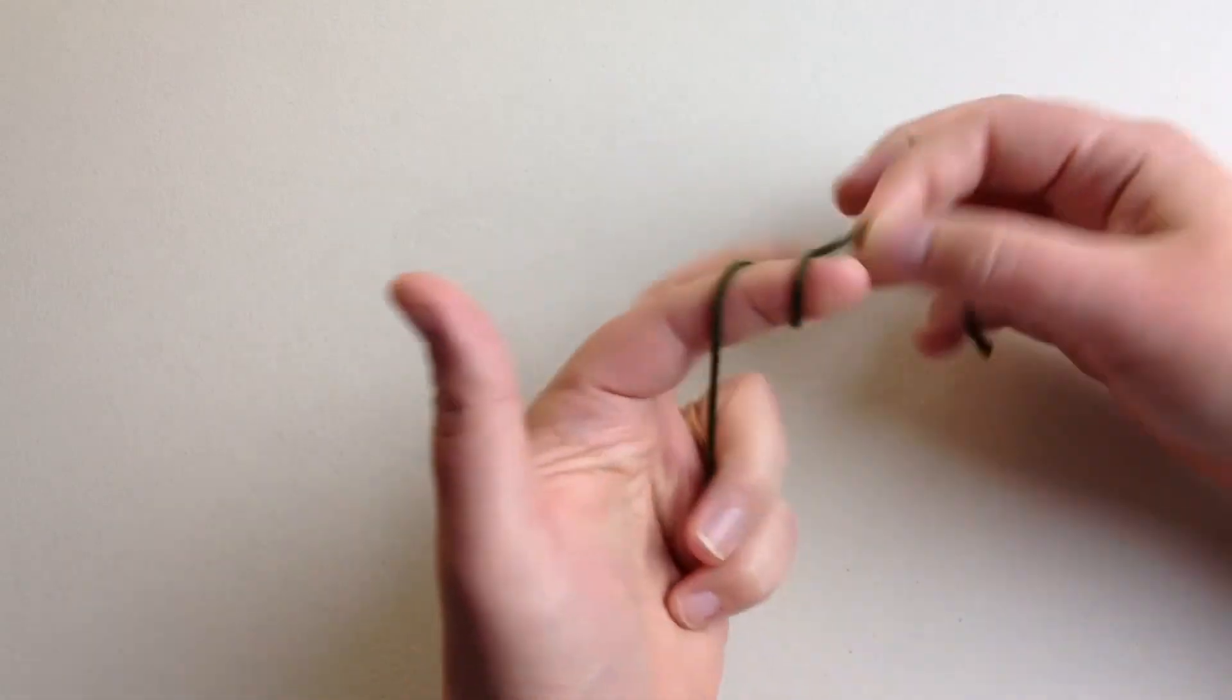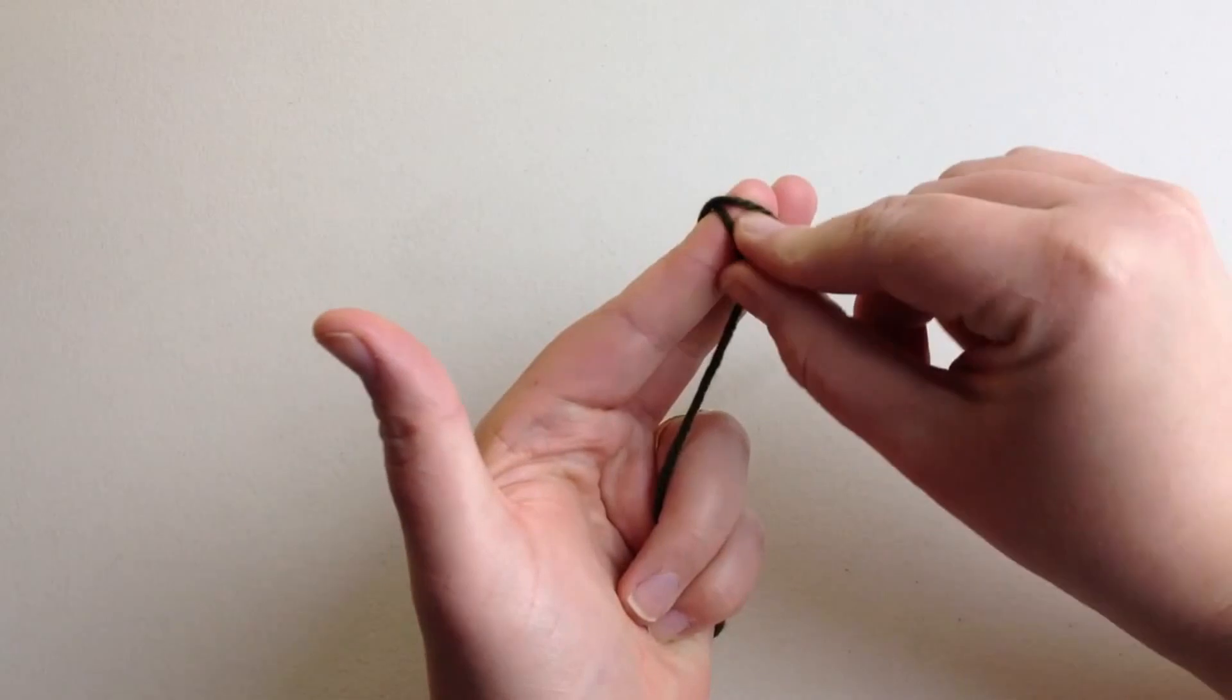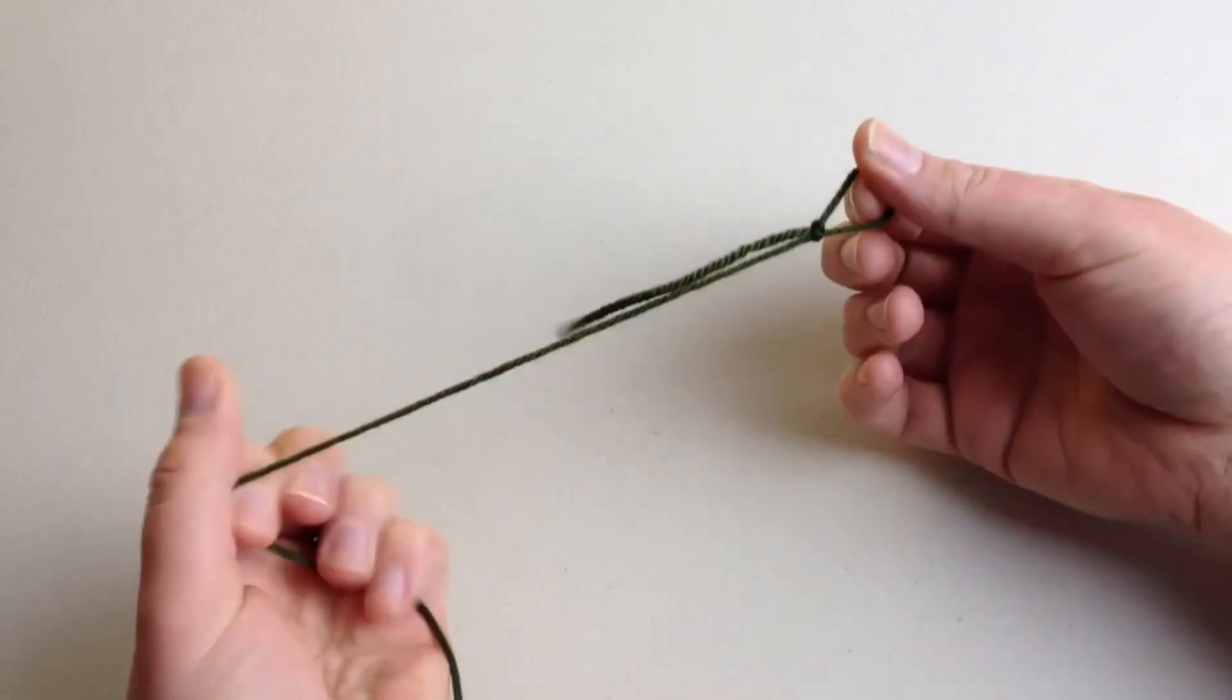Let's start by making a slip knot. Take the back over the front and the back over the front again, making our slip knot. With our extra loop here, before we tighten it...